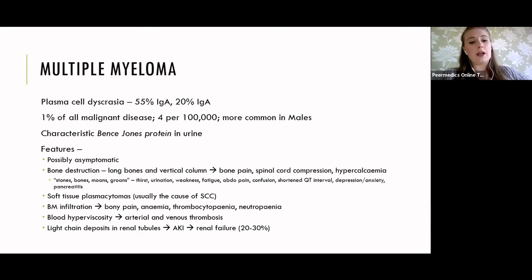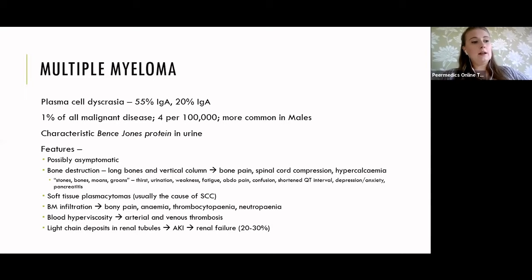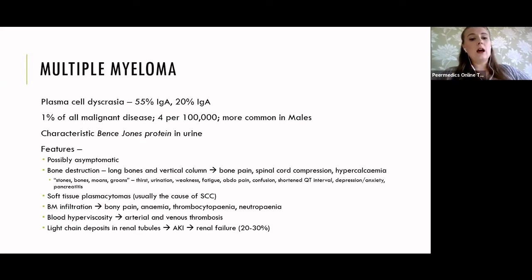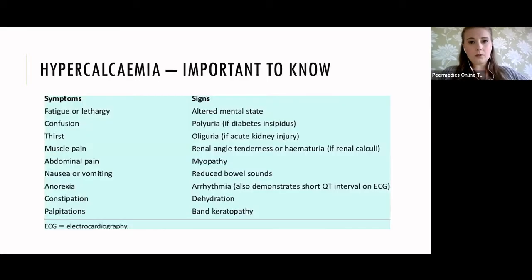You also get soft tissue plasmacytomas - deposits of plasma cell tumours which can happen in isolation and are usually the cause of spinal cord compression. With bone marrow infiltration you get bony pain, anaemia, thrombocytopenia and neutropenia. You get blood hyperviscosity causing increased susceptibility to both venous and arterial thrombosis. Deposits of light chains in the renal tubules increase susceptibility to AKI, and in about 20-30% of cases you can get renal failure.